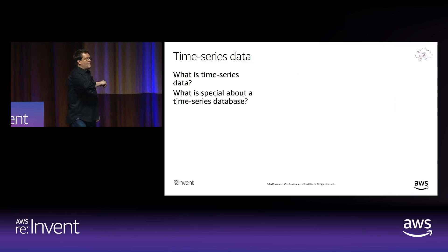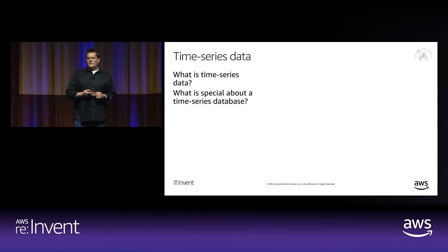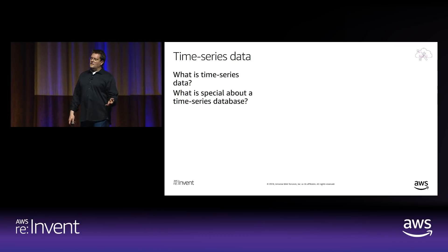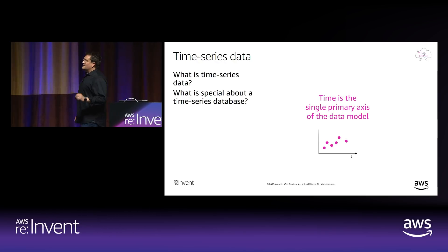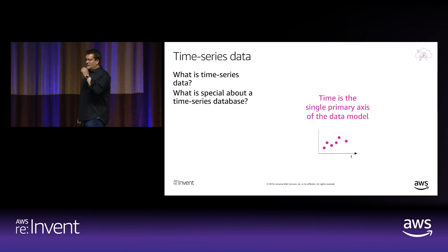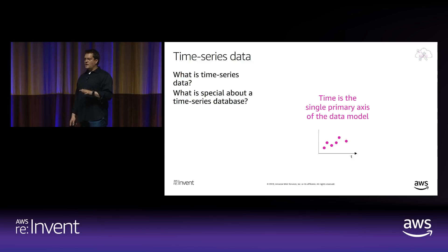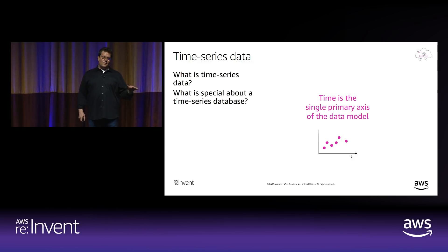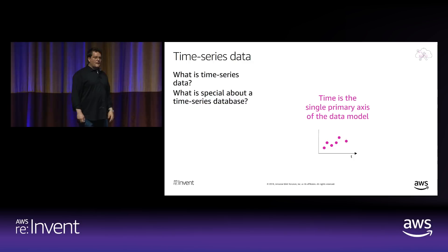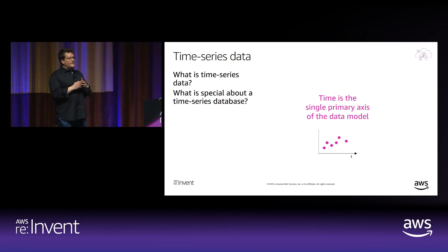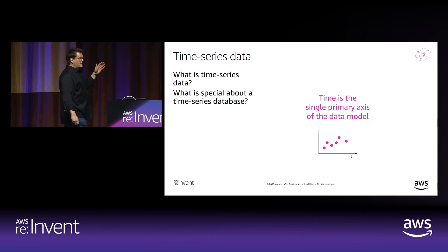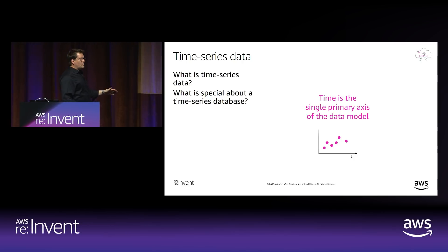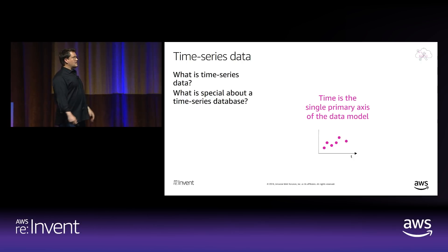A lot of people ask: what's so special about a time series database — if I can record a timestamp, isn't that just time series data? No. What makes a time series database special is that time is the single primary axis of the data model — X can only be time. When you have that assumption baked into the system, it allows you to specialize and optimize the entire stack: from ingest to storage to query. In query, you're always querying over time, and there's a lot you can do to optimize for that.